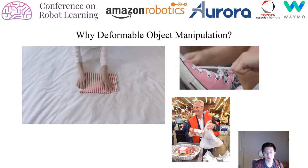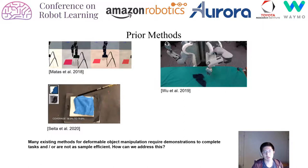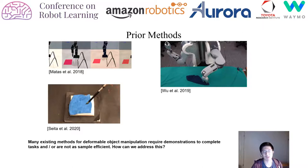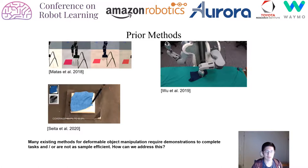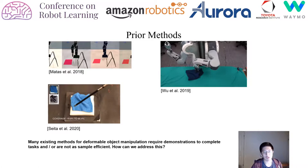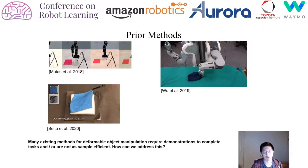There has been a lot of prior work in solving these manipulation tasks. Recently, work has focused on using deep learning methods such as imitation learning or model-free reinforcement learning to solve these difficult cloth manipulation tasks. However, a lot of these methods require either a lot of demonstrations or are not sample-efficient, requiring a lot of samples in simulation to work correctly.